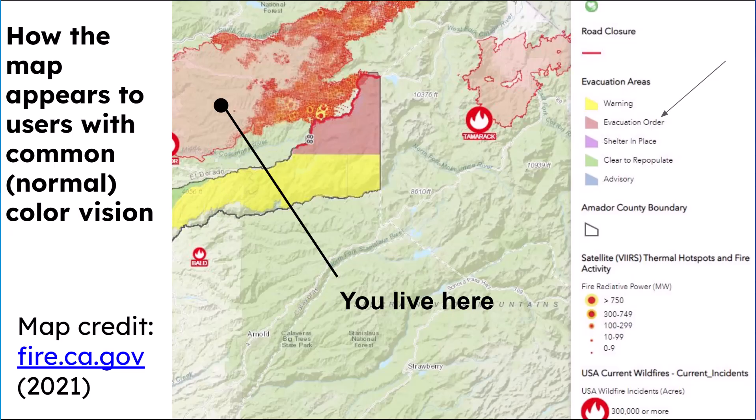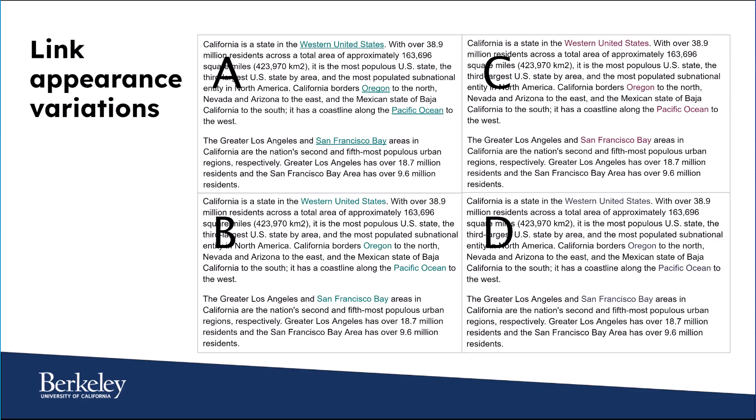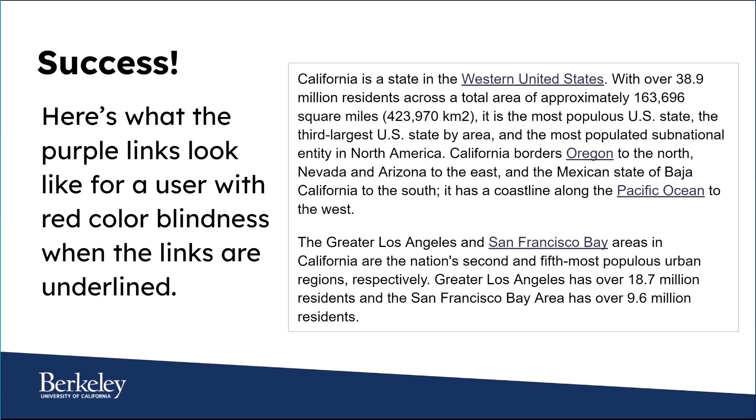Let's look at another example of using color to convey information. Here's a snippet of text about the state of California pasted into a Google Doc. The default for linked text in Google Docs is cobalt blue and underlined. Sections A and B show what the blue default links in Google Docs look like for someone with blue color blindness — they are still visible, but in B notice that the underlines have been removed, making the links a little bit harder to pick out. Section C shows links that someone has changed to purple, again without underlining, so even with color vision it's a little bit harder to pick out the links. Now look at section D — this is what the purple links look like for someone with red color blindness. You can't see the links at all. So how can we fix this? Here's what those purple links look like for a user with red color blindness when the links are underlined. Although they appear to be the same color as the paragraph text, they're easy to see. This is an example of not using color alone to convey information.